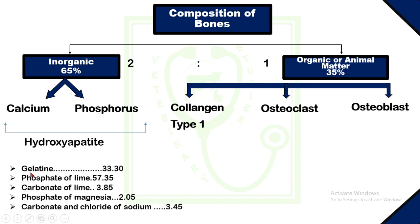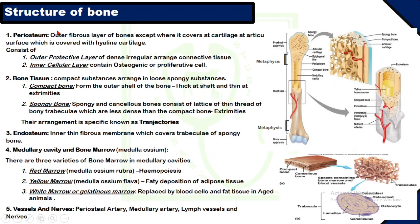The constituents yielded after boiling of bone are: gelatin 33.30%, phosphate of lime 57.35%, carbonate of lime 3.85%, phosphate of magnesia 2.05%, and carbonate and chloride of sodium 3.45%.